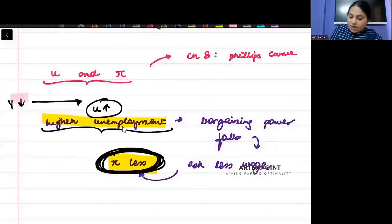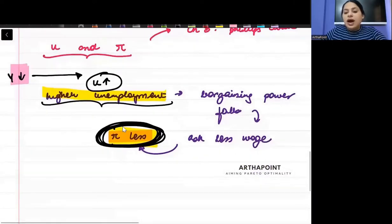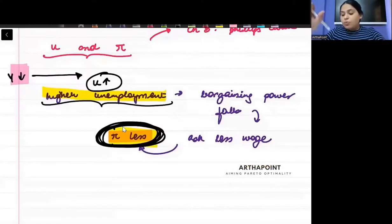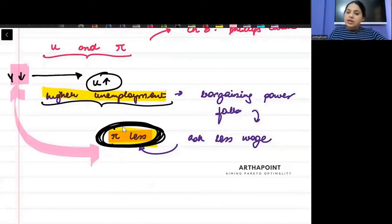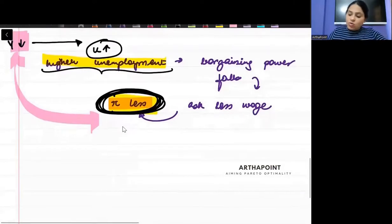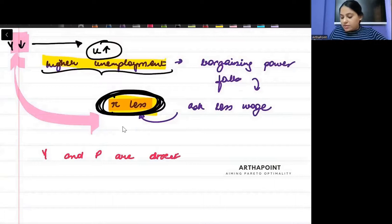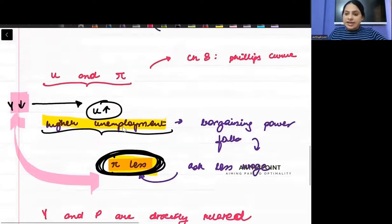So if I combine them, what is the relationship I am getting between output and inflation? I am getting a positive relationship between output and inflation. Output and inflation have a direct relationship. You see this? They are moving in the same direction. So I can say that Y and P are directly related.